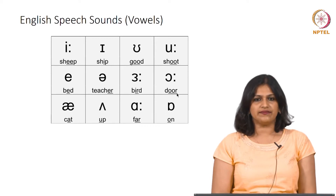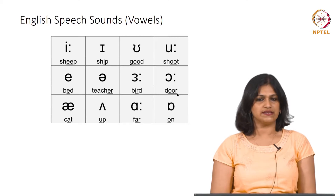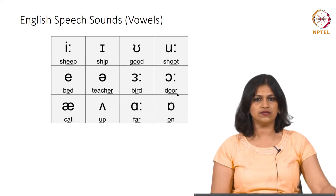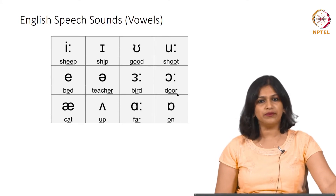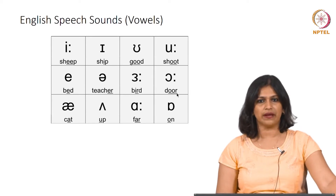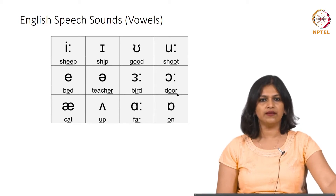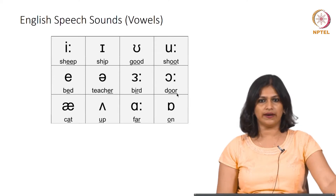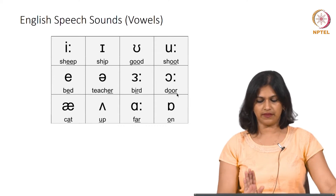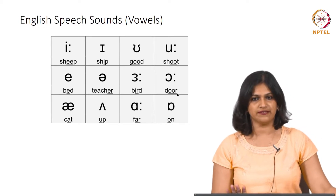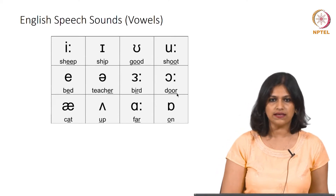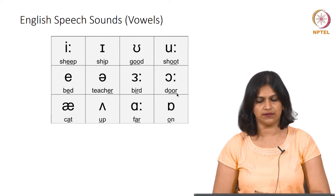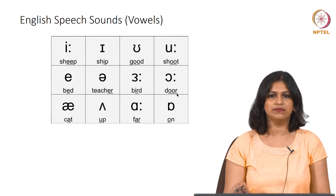If you remember the classification carefully, we had 20 vowel sounds. Out of the 20 vowel sounds, 12 of them are pure vowels and 8 of them are diphthongs. Diphthongs are primarily the combination of 2 vowel sounds together. I will check the 12 pure vowels first. Out of these 12 pure vowels, some are long vowels and some are short vowels.